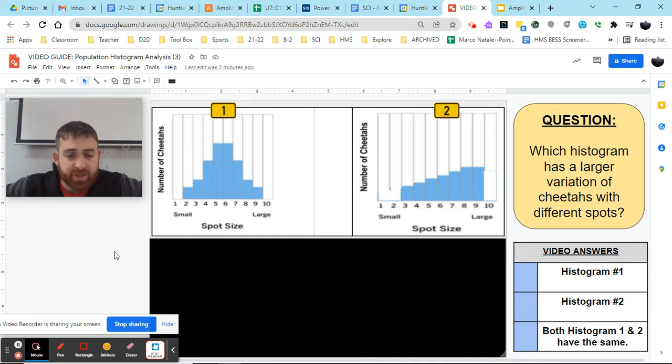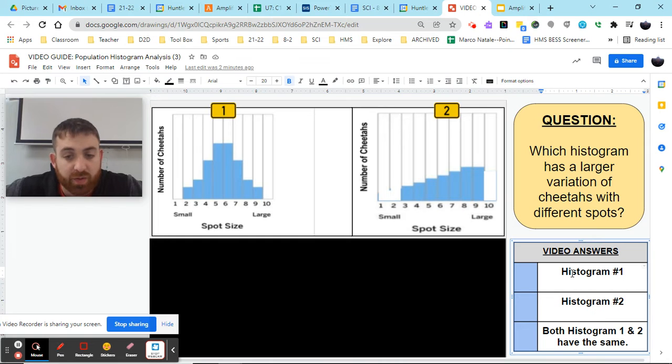If you're looking at the histogram in front of you, or set of histograms, we again have a pair of histograms that deal with the number of cheetahs. And those cheetahs have a specific feature we're focusing on, and that is spot size. And we're looking at 10 different traits from small spots to large spots with two different populations. Now, with those histograms, we are looking to answer the question, which histogram has a larger variation of cheetahs with different spots? So, looking at our histograms for one and two, we need to decide, does number one have a larger variation of cheetahs with different spots? Does number two, or do they have the same variation of cheetahs with different spots? Go ahead and make your answer, select your answer, pause the video, and then unpause it when you're ready to go over the answer.